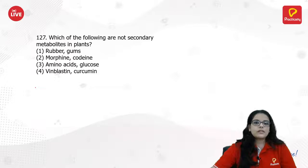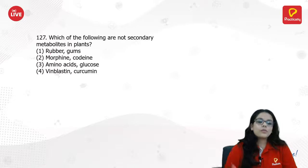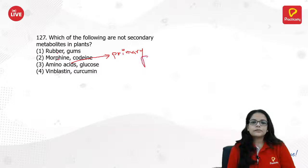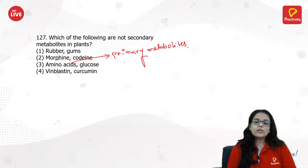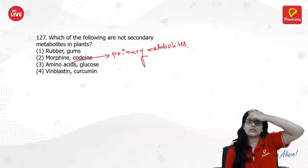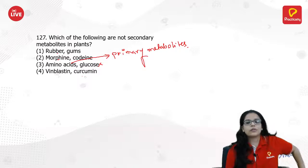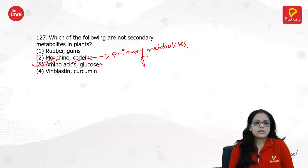Which of the following are not secondary metabolites in plants? Rubber and gum are all secondary metabolites, and so is morphine. Amino acids are primary metabolites. Glucose is a raw material or primary metabolite — it can never be a secondary metabolite. Vinblastine and curcumin — curcumin is found in Haldi. The answer is 3.